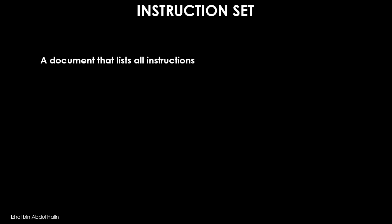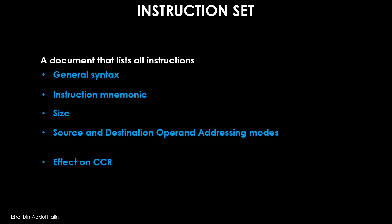As mentioned previously, the instruction set is a document that lists all of the instructions of a microprocessor. Each instruction is explained in detail in the instruction set. It gives the general syntax, mnemonic, size, source and destination operand addressing modes, and how each instruction affects the condition code register.